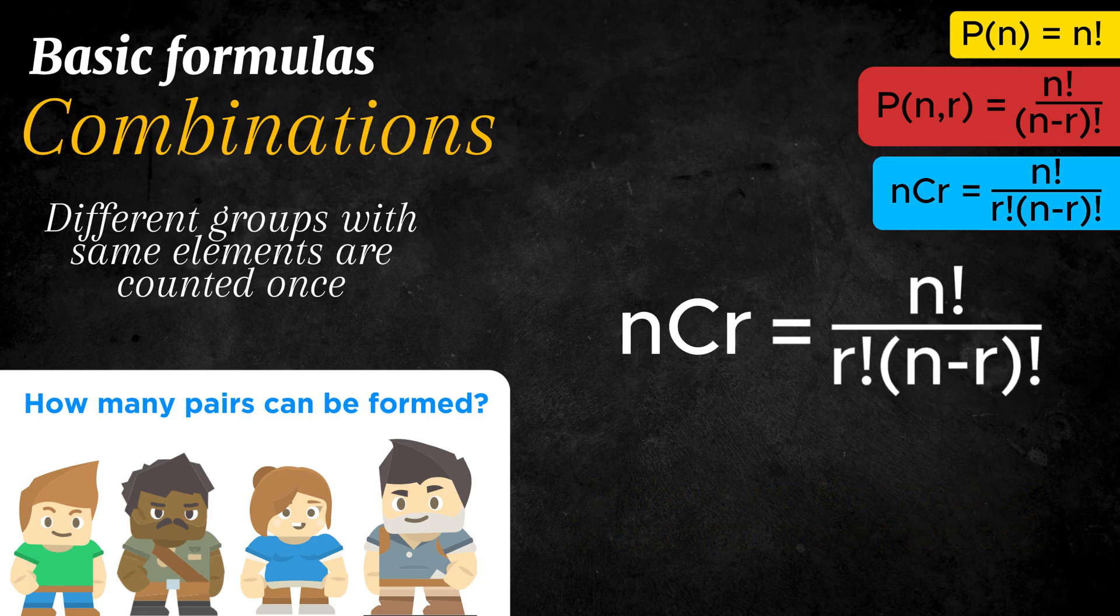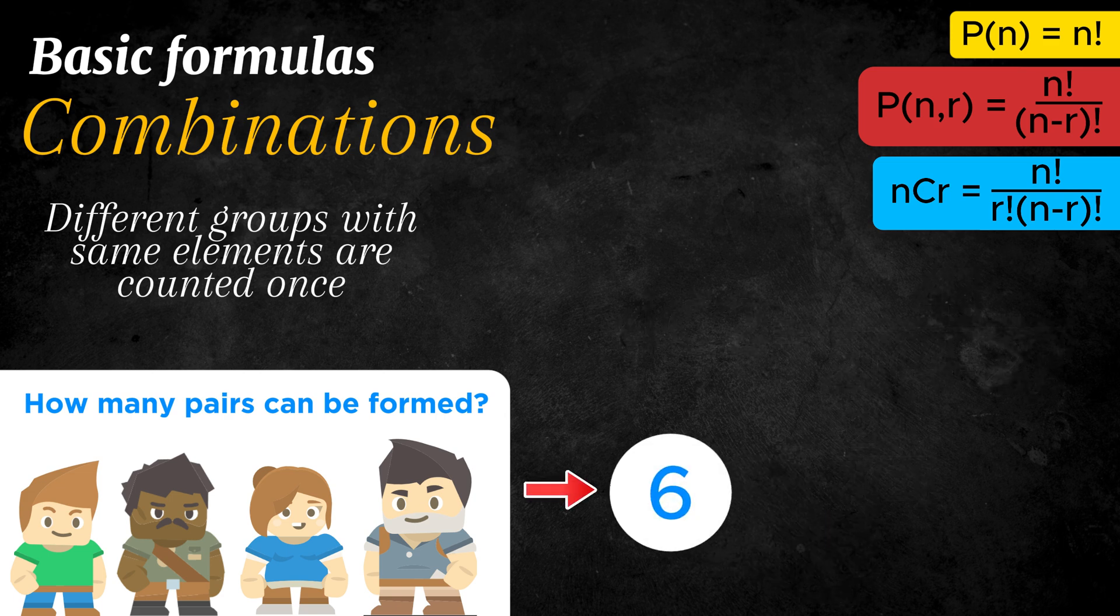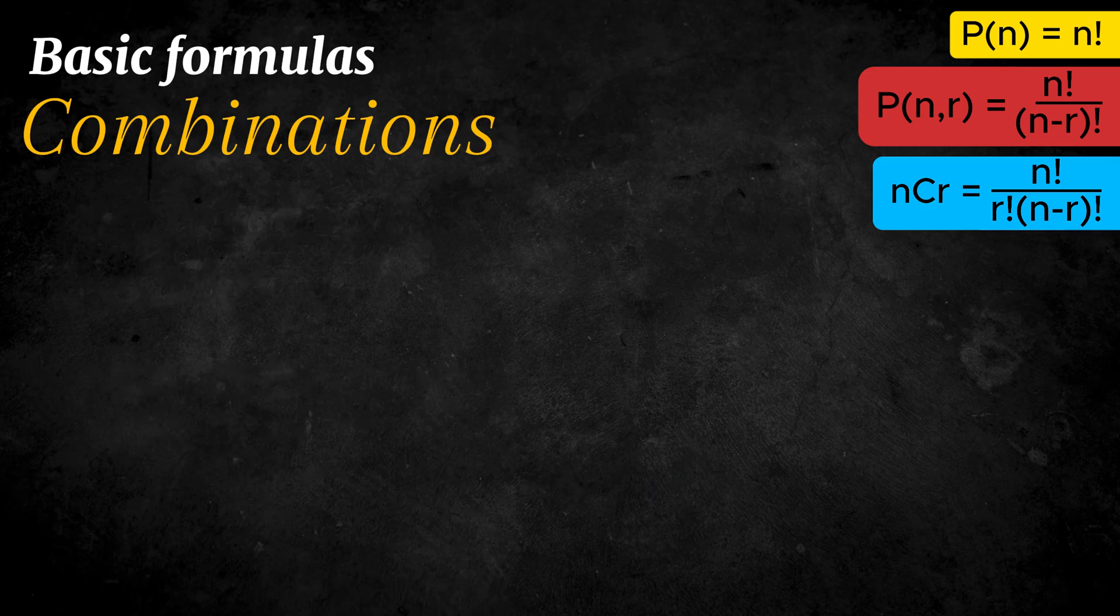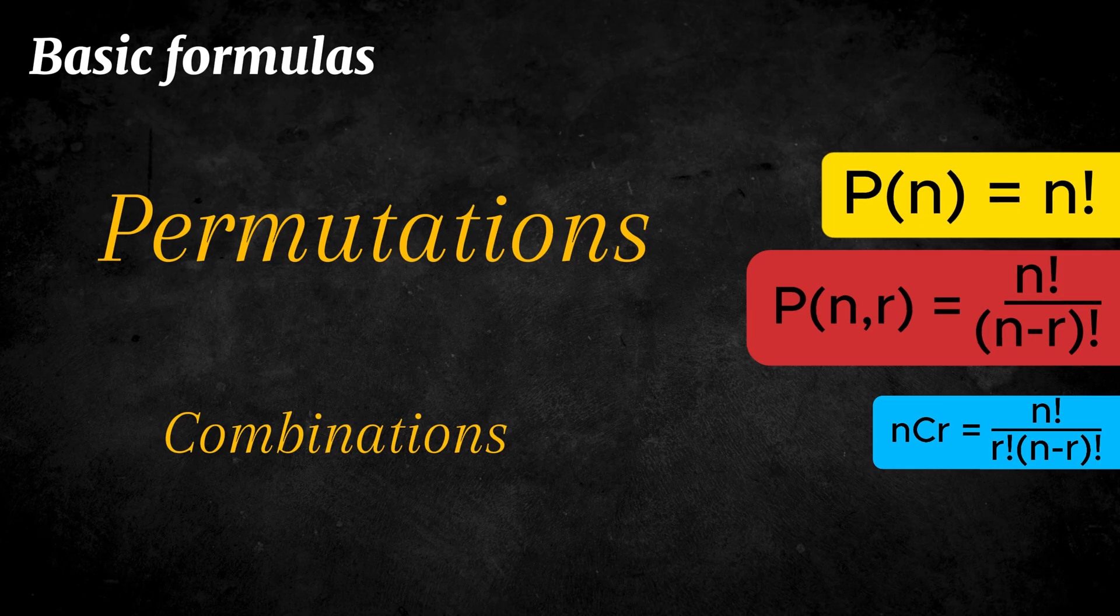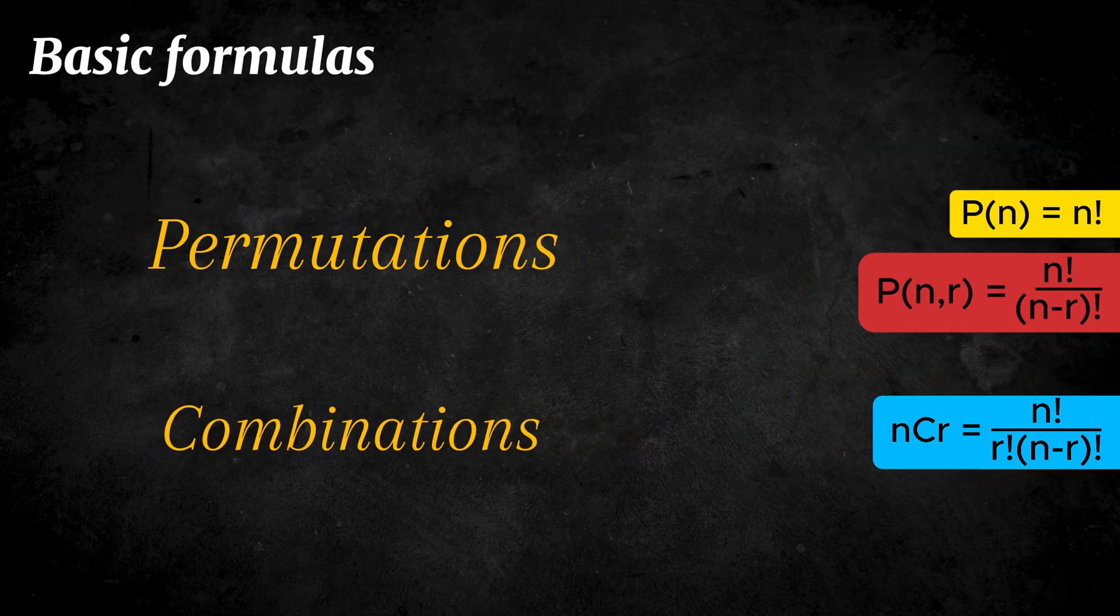In this case, we calculate four choose two, which equals six. This means there are six unique groups of two people. Understanding the difference between permutations and combinations is crucial in combinatorics because it changes the way we count arrangements or selections.